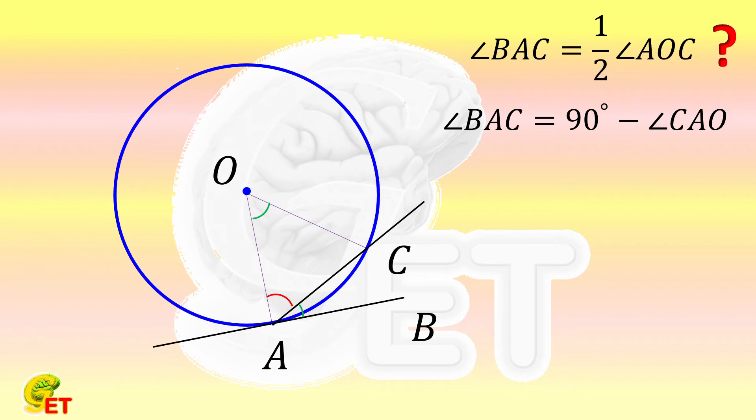Then let's look at what the angle AOC is equal to. Since the summation of the interior angles of a triangle is 180 degrees, angle AOC is equal to 180 degrees minus the summation of angles CAO and ACO.